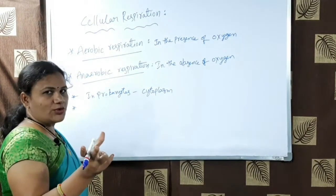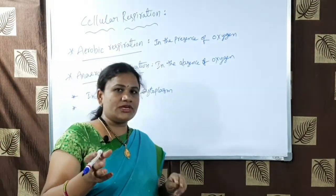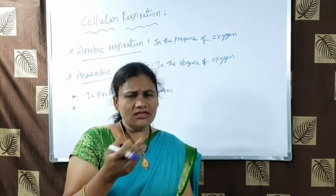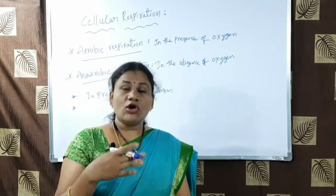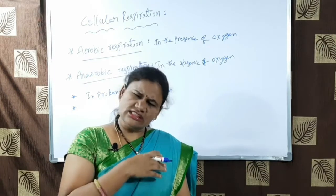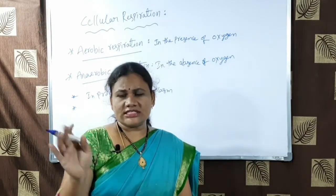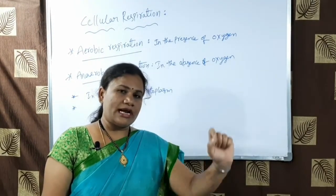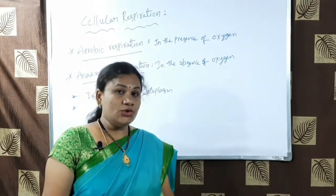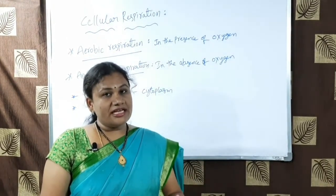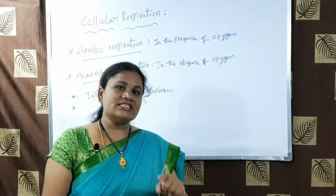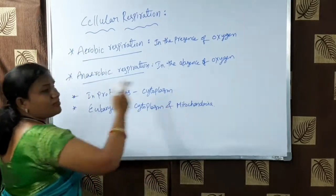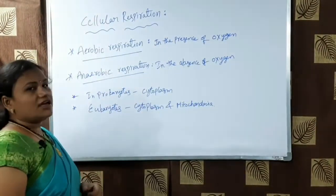In eukaryotes — organisms which have a specific nucleus — all cell organelles are present, such as ribosomes, lysosomes, Golgi apparatus, and cytoskeleton. In prokaryotes, since nucleus is absent, only a small strand of genetic material is present. In eukaryotes, cellular respiration takes place in the cytoplasm as well as in the mitochondria.